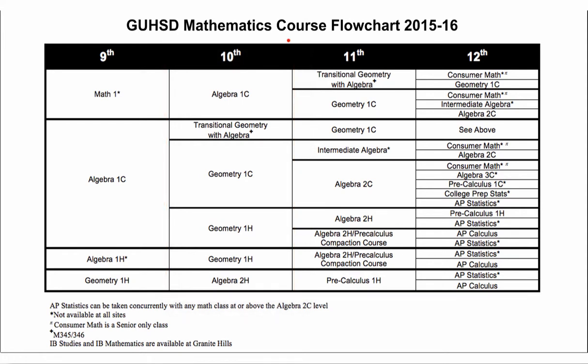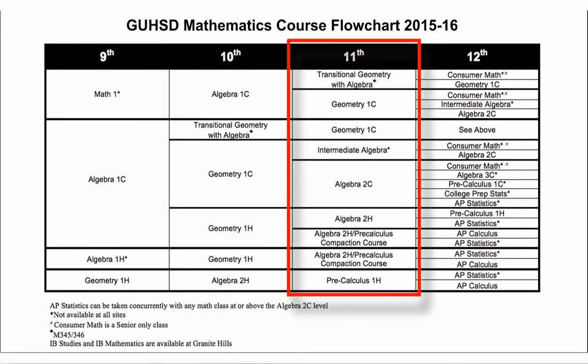From 10th grade, students go on to their 11th grade year. The high school district requirement for mathematics is one course beyond Algebra 1, and for college and career readiness, most students need 3 years of mathematics — 4 preferred. In 11th grade, courses available include Transitional Geometry with Algebra for Math 1 students, Geometry 1c, Intermediate Algebra, Algebra 2c, Algebra 2 Honors, and the Algebra 2 Honors Pre-Calculus Compaction course.